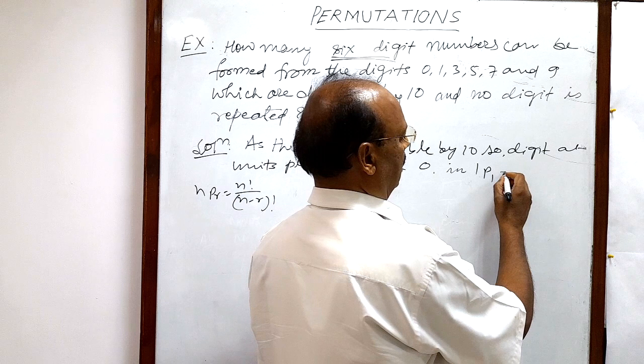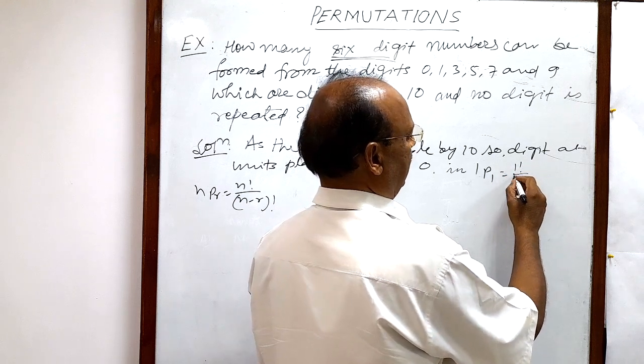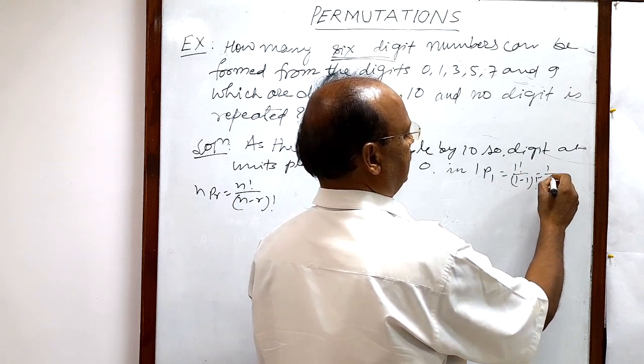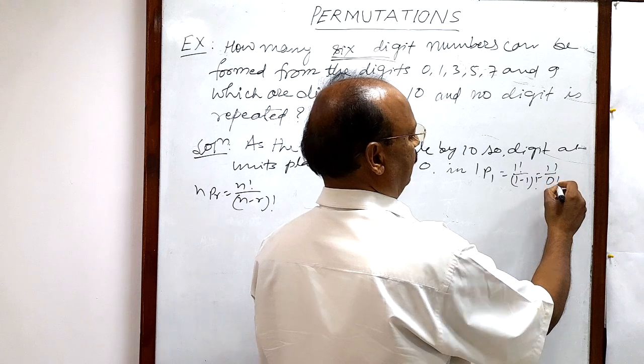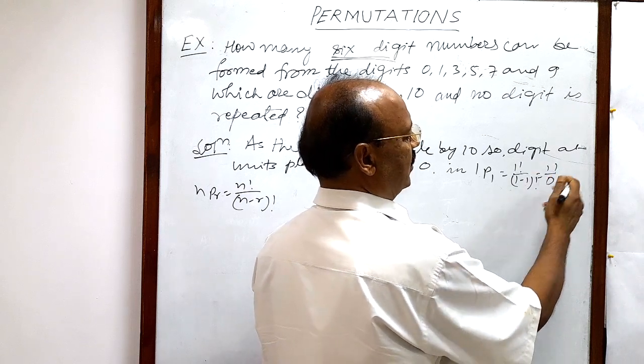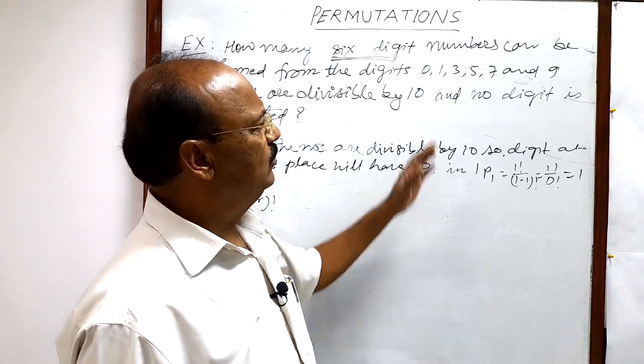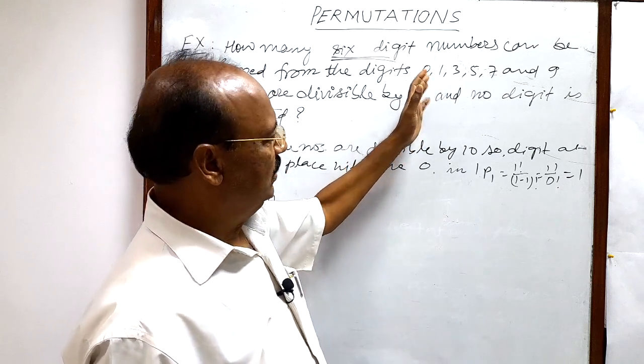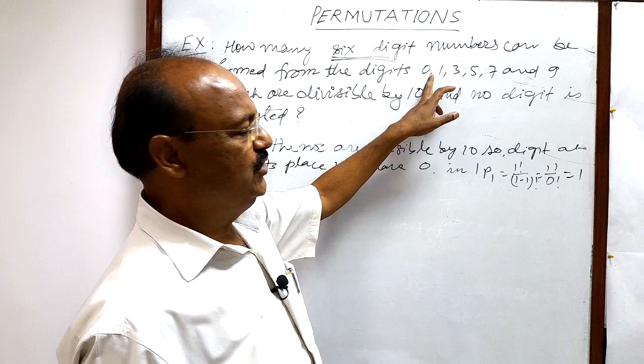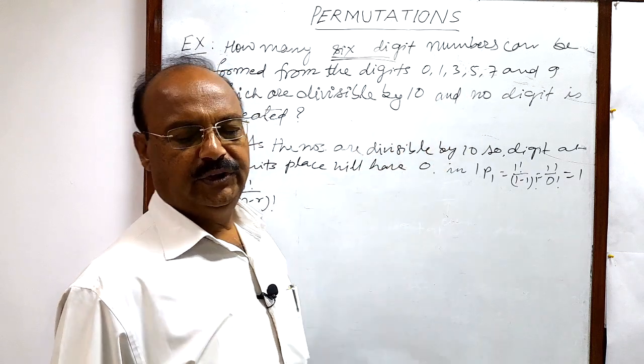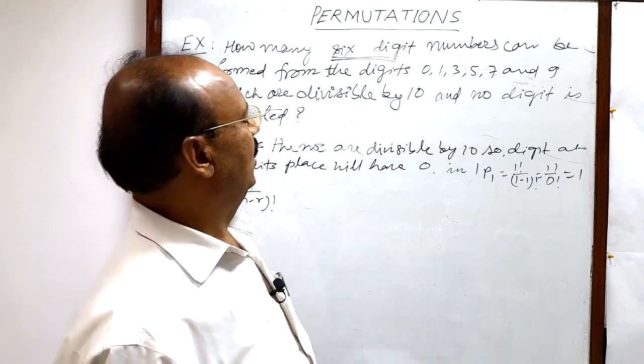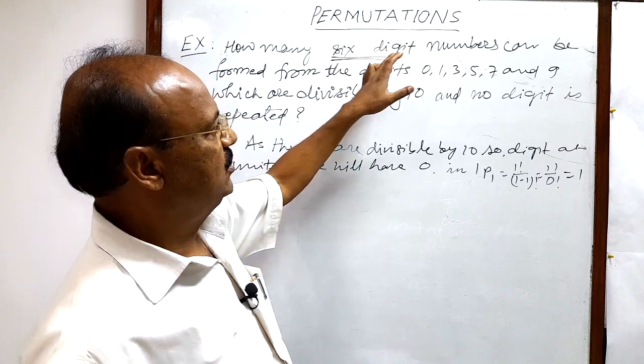This will be equal to 1. How? 1 factorial by 1 minus 1 factorial, so this is 1 factorial by 0 factorial, this is 1, this is 1, so finally this is equal to 1. There is only one way by which we can select this 0 for units place, and the number will be six-digit numbers.